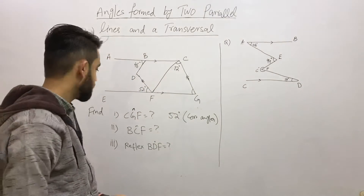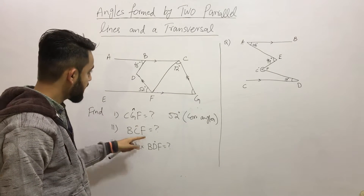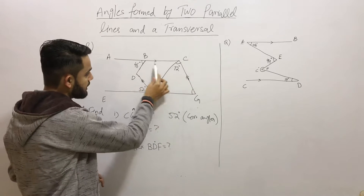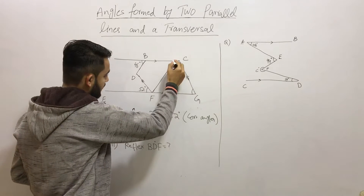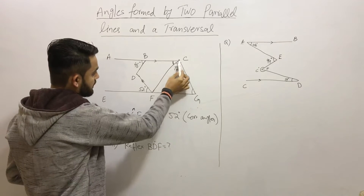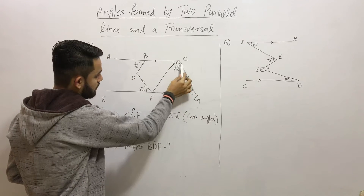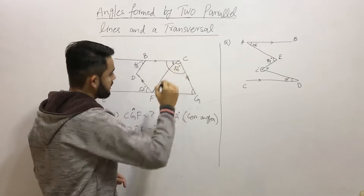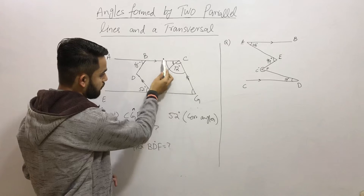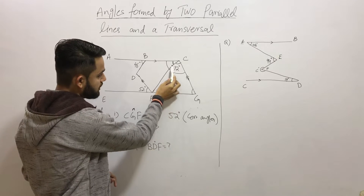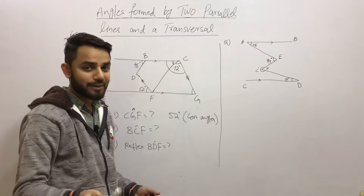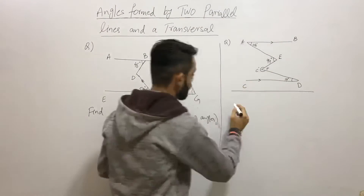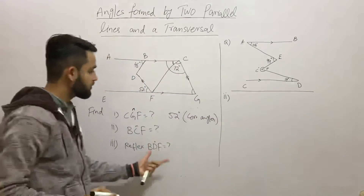Now we need to find angle BCF. Points B, C, and F tell us which angle to find. We can see angle BCG is already marked as 72 degrees. To find angle BCF, we first need to find the complete angle BCG, then subtract 72 degrees from it. We don't have space here, so I'll work out the complete angle in the next part.